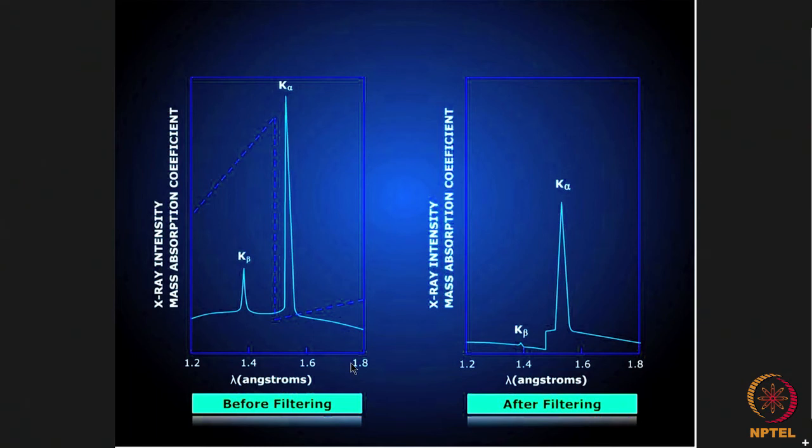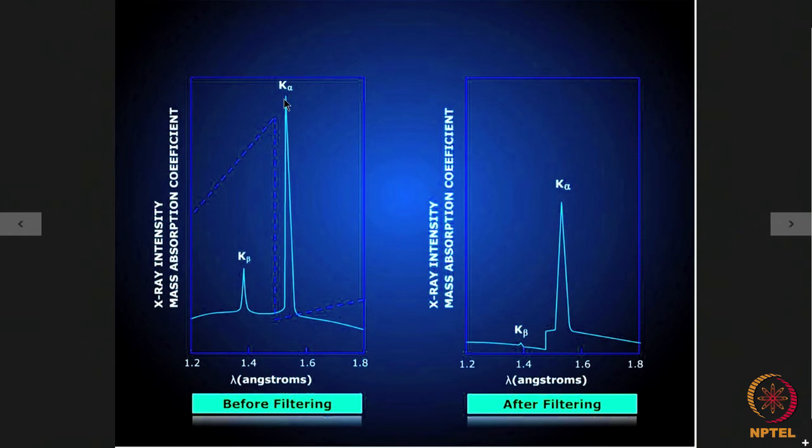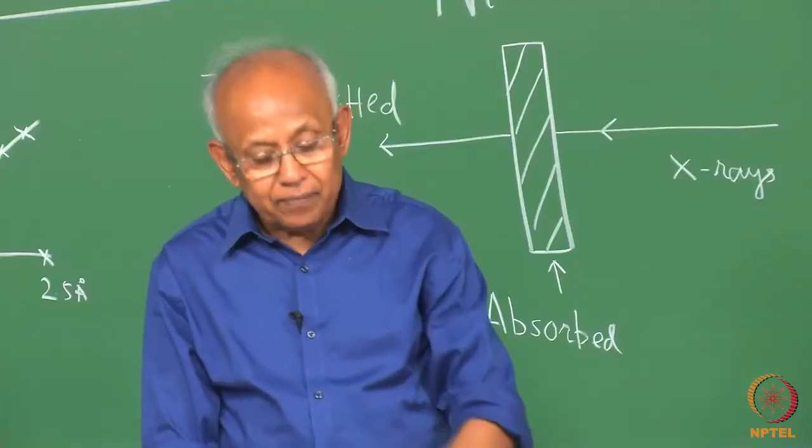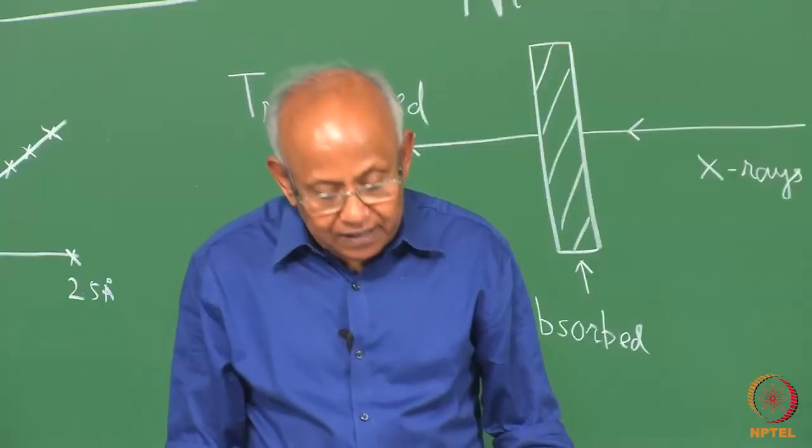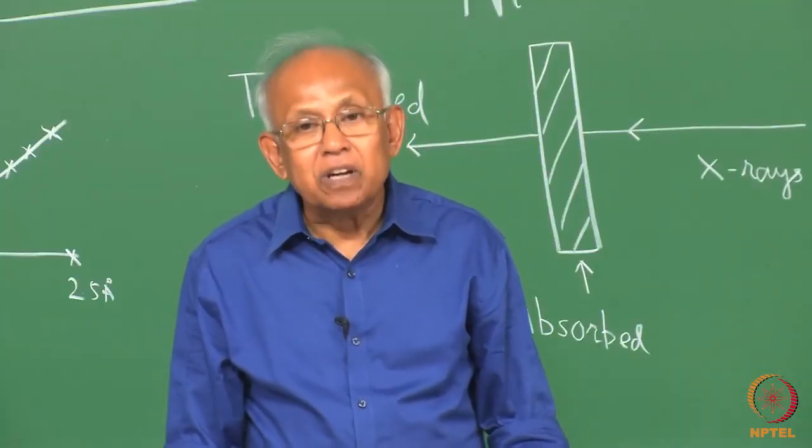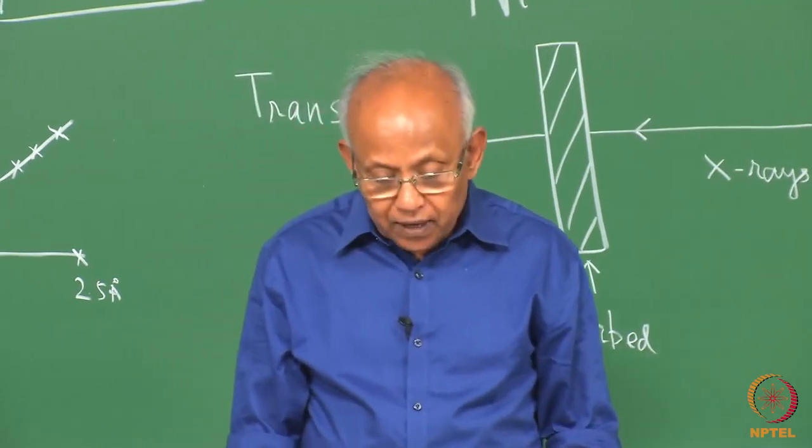What does that mean? That if we use nickel in front of the radiation coming out of a copper target in an X-ray machine, most of the radiations other than K-alpha will be absorbed to a much higher degree than the K-alpha radiation itself. In other words, the output of the X-ray machine when it goes through a nickel filter will be containing mostly the K-alpha radiation along with lower intensities of K-beta and other white radiation components. Nickel can be used as a filter in case of an X-ray machine having copper as a target material.